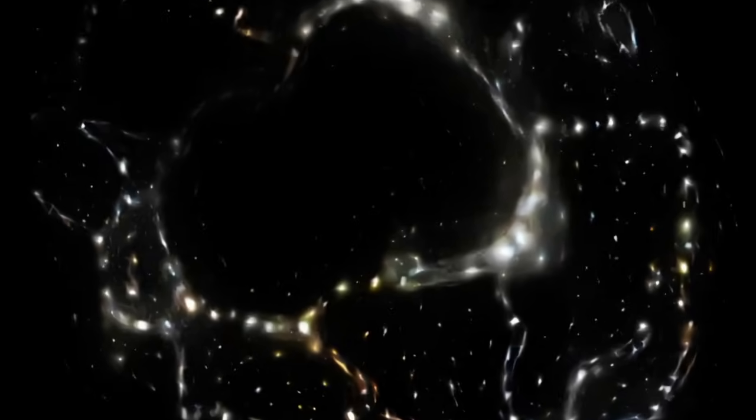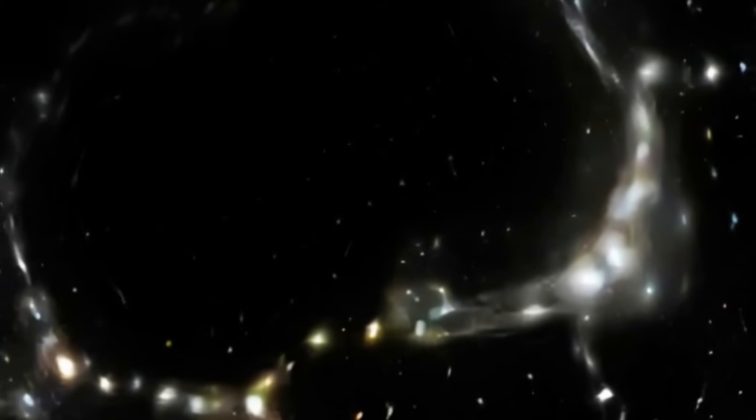One such structure is the so-called local hole, or Keenan-Barger-Cowry Supervoid, an under-density of material in our galactic neighborhood, believed to be roughly two billion light-years across. This year, a team headed by scientists from the universities of Bonn and St. Andrews in Scotland found that the gravitational attraction of the walls of the supervoid may pull local galaxies toward them 10% faster than the rate predicted by the standard model, thus explaining the discrepancy between local galaxy speeds and the cosmic microwave background.